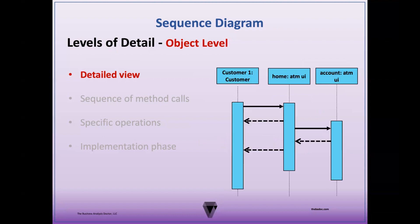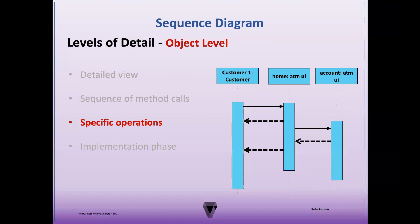The object level sequence diagram provides a detailed view of the interactions between individual objects or instances of classes within a specific use case or scenario. This level shows the sequence of method calls, message exchanges, and the flow of control between the objects as they collaborate to achieve a particular task. These diagrams are essential during the implementation phase, as they guide developers in writing the code for the individual objects and their interactions.